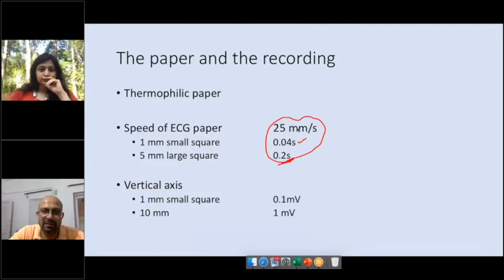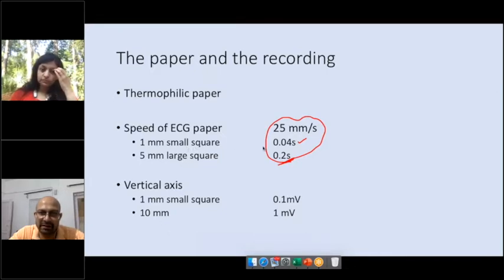Let me interrupt here. These speeds are important. You need to know exactly what one small square is indicative of and what five large squares mean. Five large squares is 0.2 seconds and one millimeter square is 0.04 seconds. You will not be able to identify abnormalities if you do not remember these speeds.